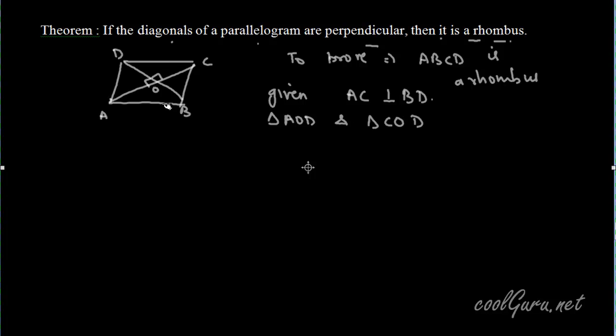We will prove that these two triangles are congruent. First is that AO is equal to OC. Why? Because ABCD is a parallelogram and we know that in a parallelogram diagonals bisect each other. Therefore AO is equal to OC.